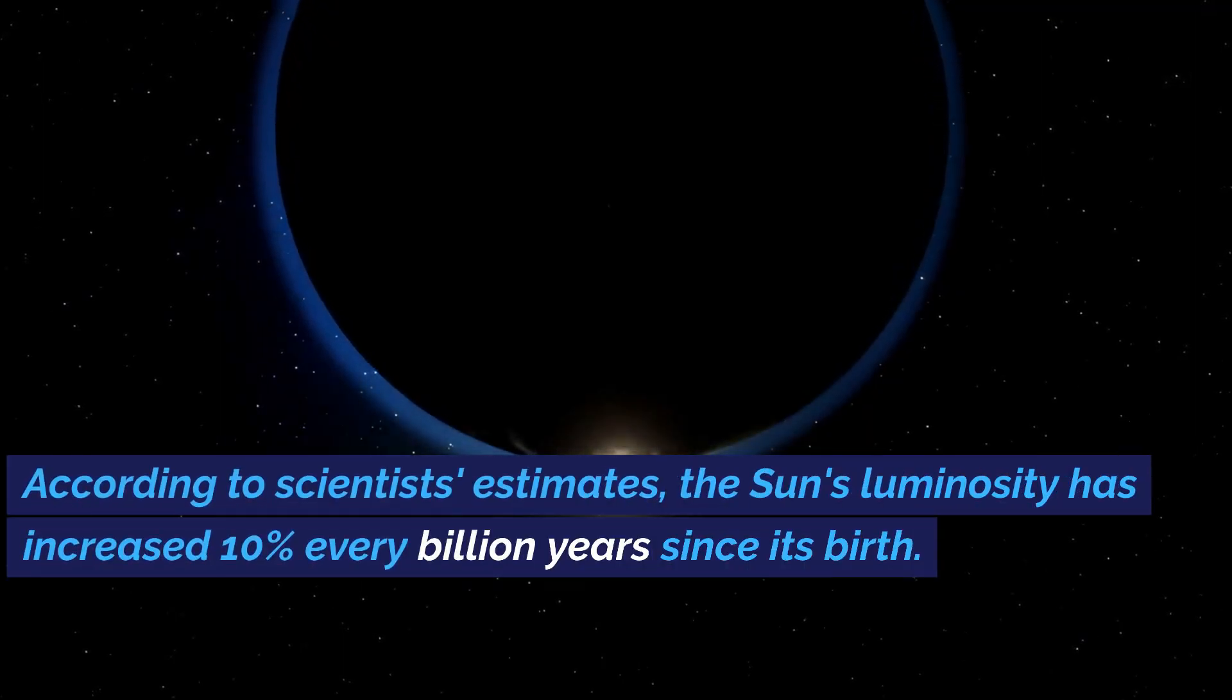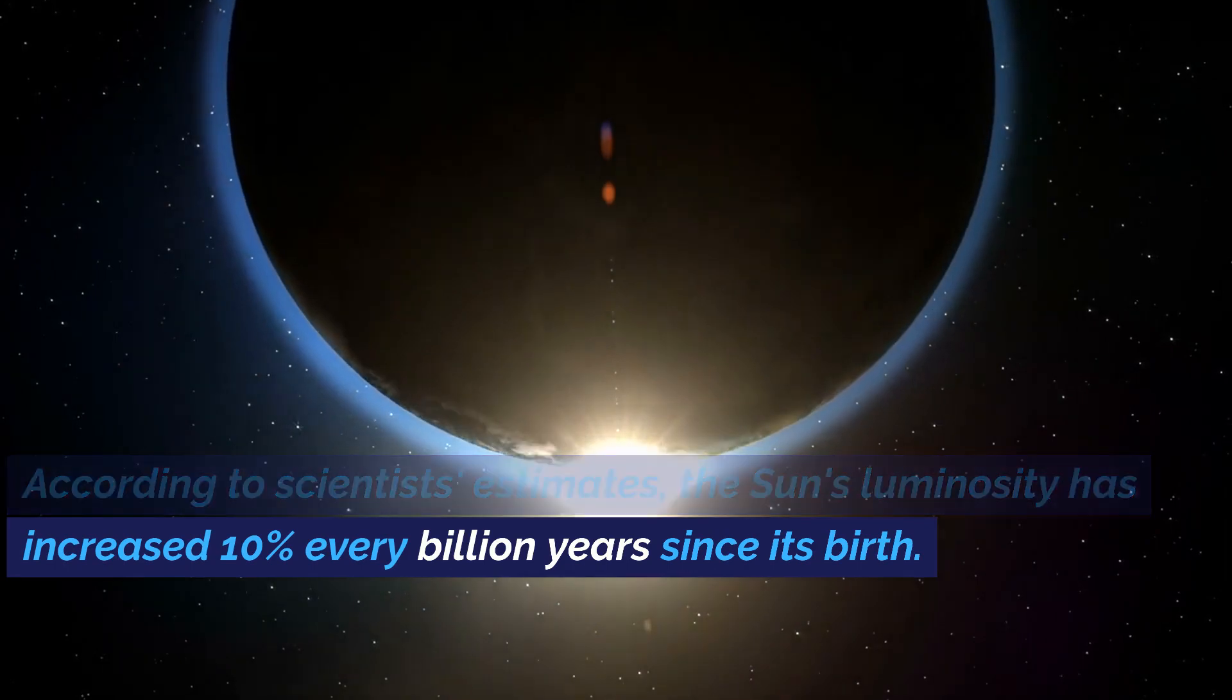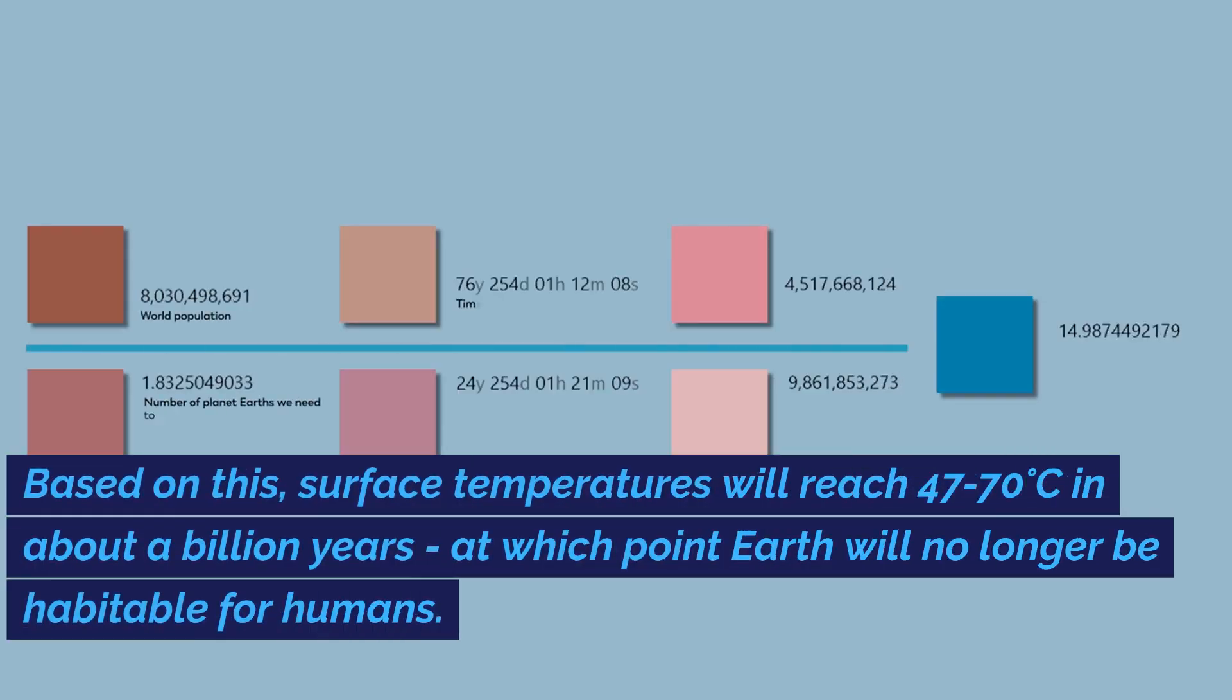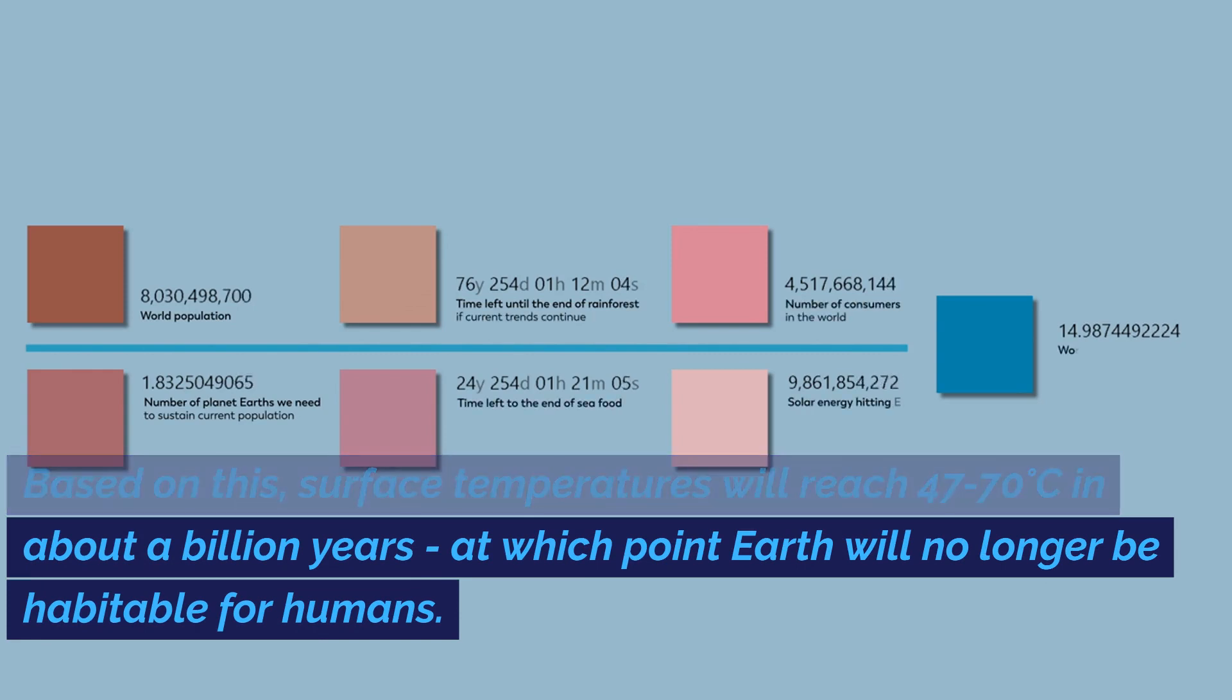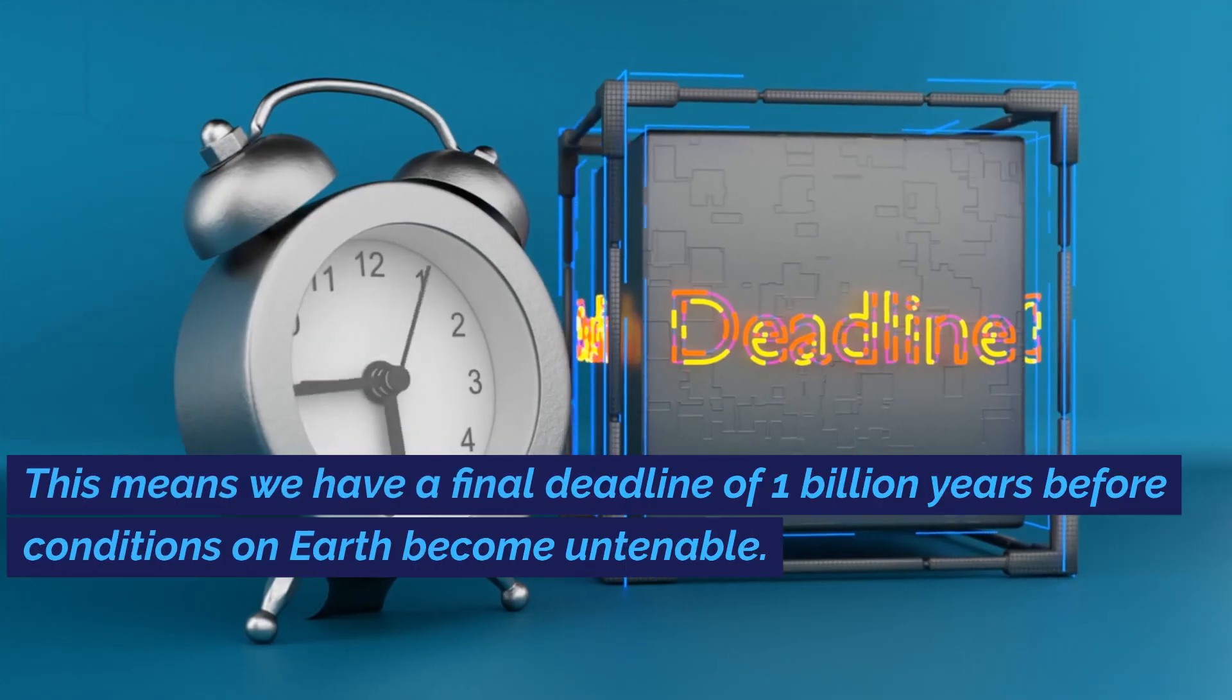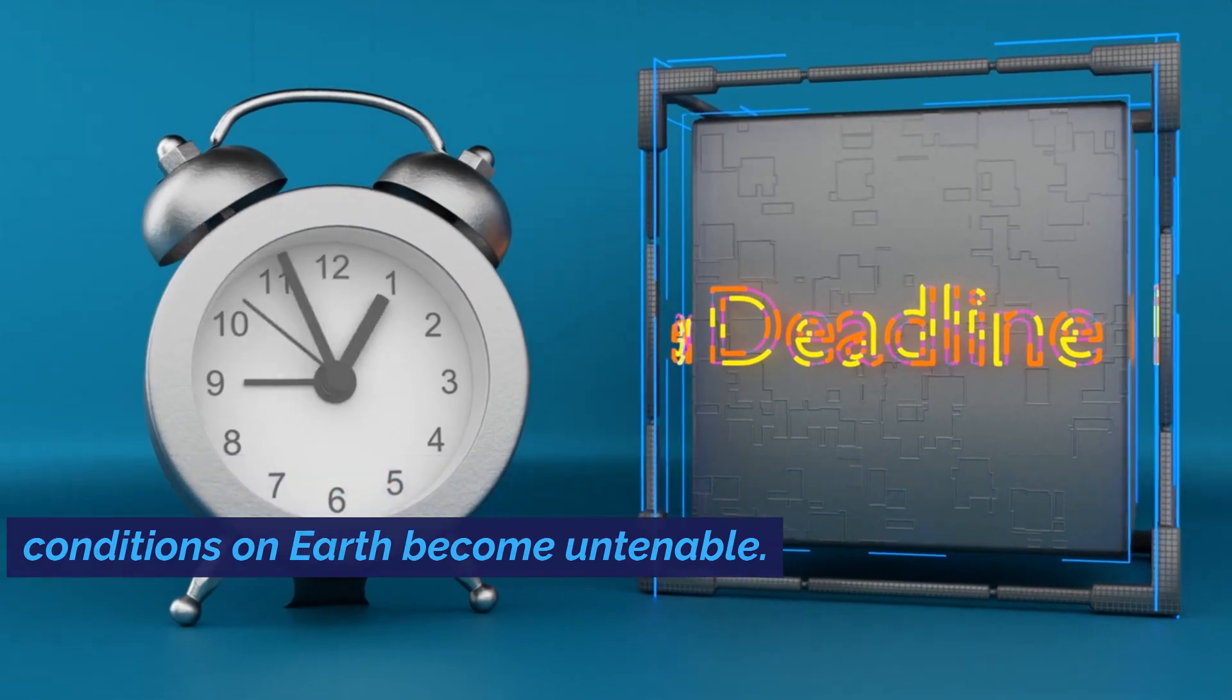According to scientists' estimates, the Sun's luminosity has increased 10% every billion years since its birth. Based on this, surface temperatures will reach 47 to 70 degrees Celsius in about a billion years, at which point Earth will no longer be habitable for humans. This means we have a final deadline of one billion years before conditions on Earth become untenable. Humans must find a new home, a planet more hospitable for human life within the next billion years.